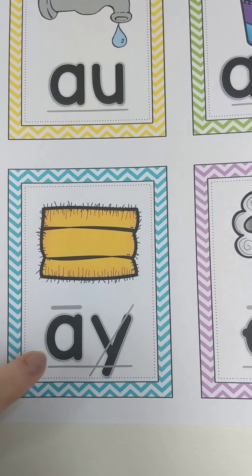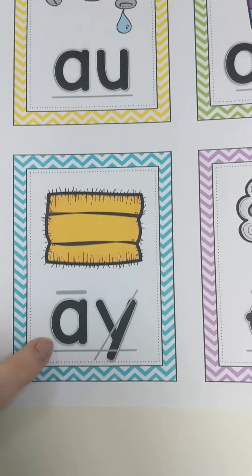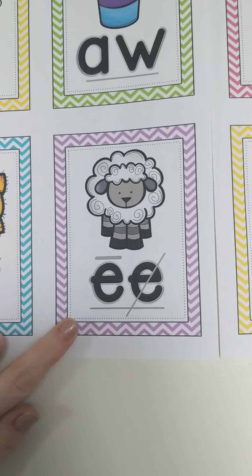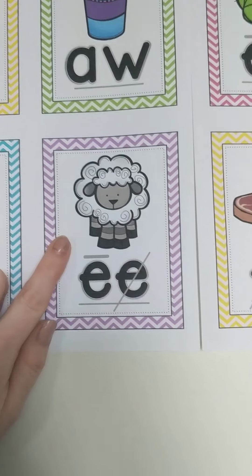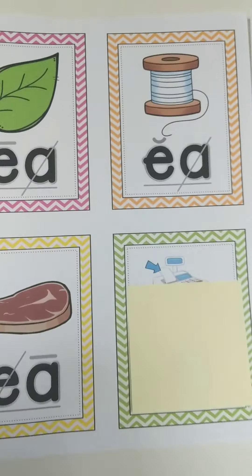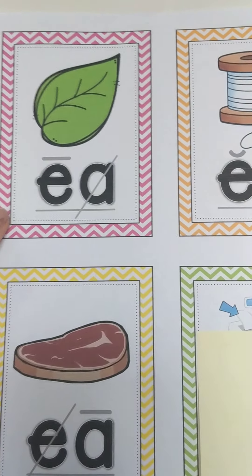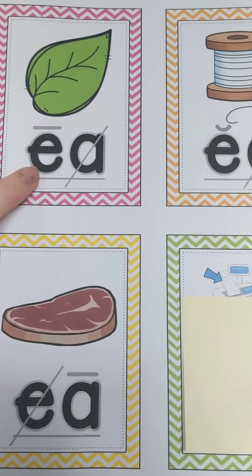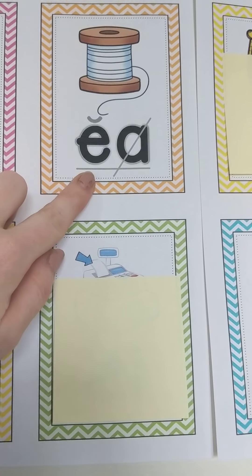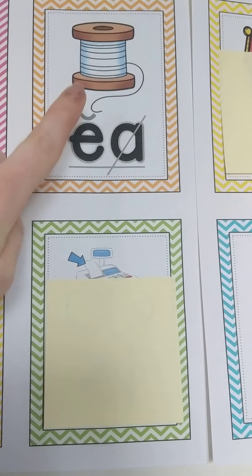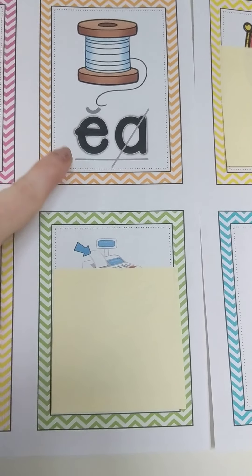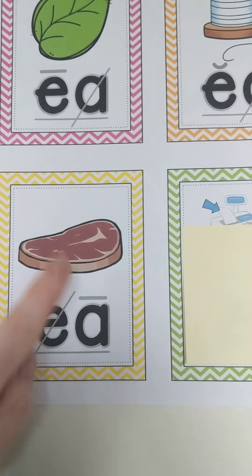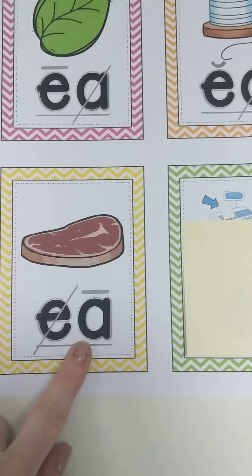Digraph A-Y, hay, a. Digraph E-E, sheep, e. Digraph E-A, leaf, e. Digraph E-A, thread, e. Digraph E-A, steak, a.